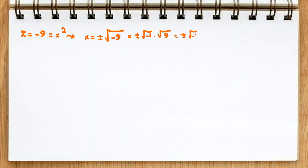So it will be plus minus square root of negative 1 times 9. So it will be plus minus square root of negative 1 times 3. In complex numbers, we call square root of negative 1 as i. So it will be plus minus 3i.